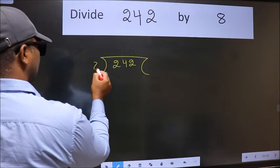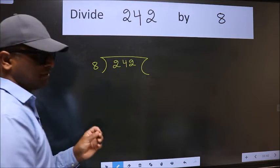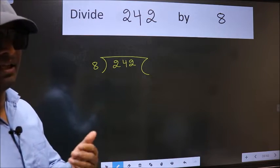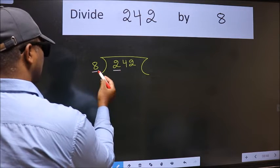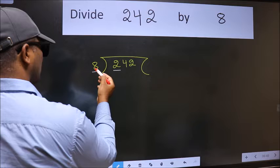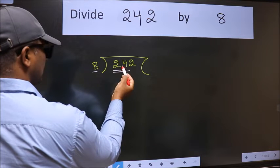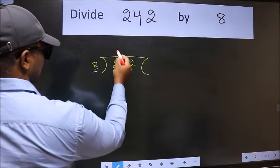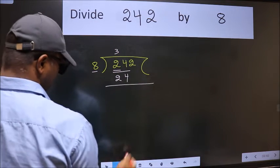8 here. This is your step 1. Next, here we have 2 and here 8. 2 is smaller than 8, so take two numbers: 24. When do we get 24 in the 8 table? 8 times 3 is 24. Now we should...